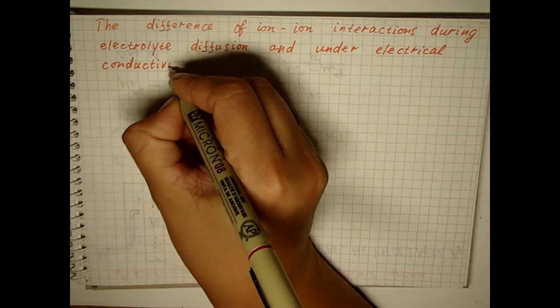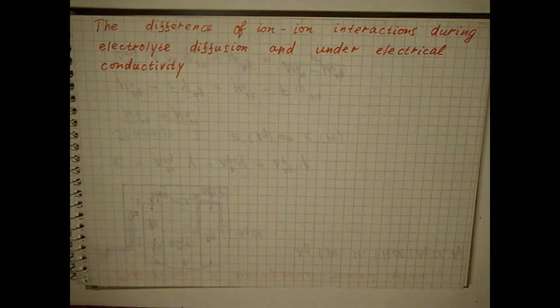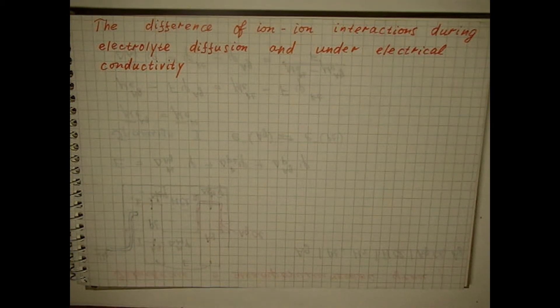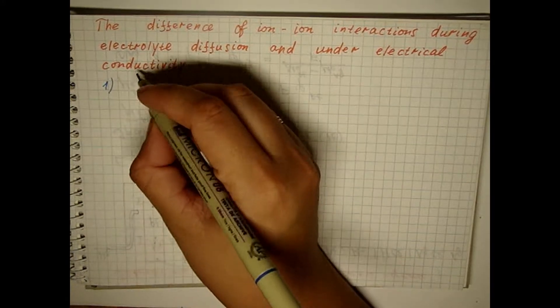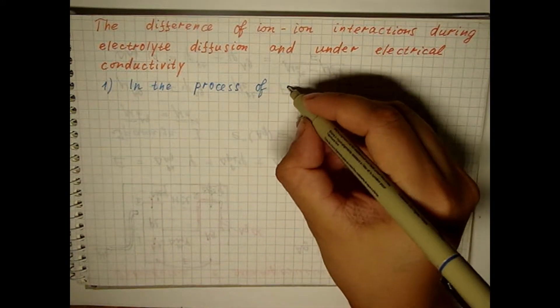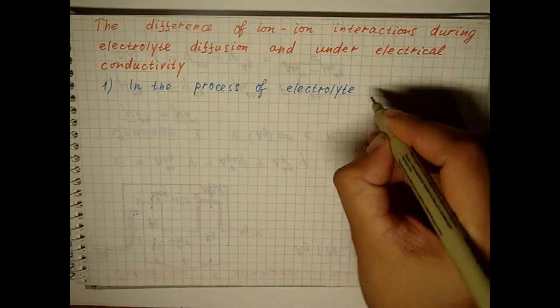Ion-ion interactions during electrolyte diffusion and under electrical conductivity have significant differences, which are caused by two reasons. In the process of electrical conductivity, cations and anions move in opposite directions.